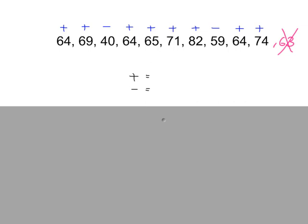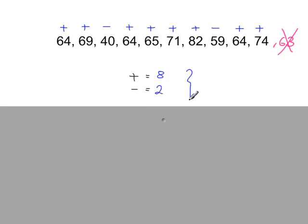So how many plus signs are there? There are 8. How many minuses are there? 2. How many of these altogether? 8 plus 2 gives you 10.